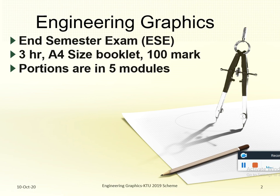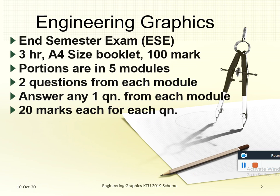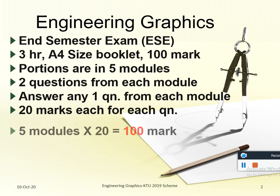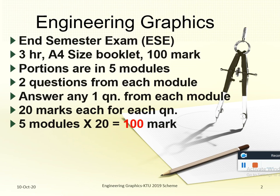For the subject Engineering Graphics, the end semester examination is 3 hours and answers are written in an A4 size booklet for 100 marks. The topic is covered in 5 modules. Two questions from each module will be given and you have to answer any one question from each module. So, 20 marks each for each question. From 5 modules, at 20 marks each, you get a maximum of 100 marks.